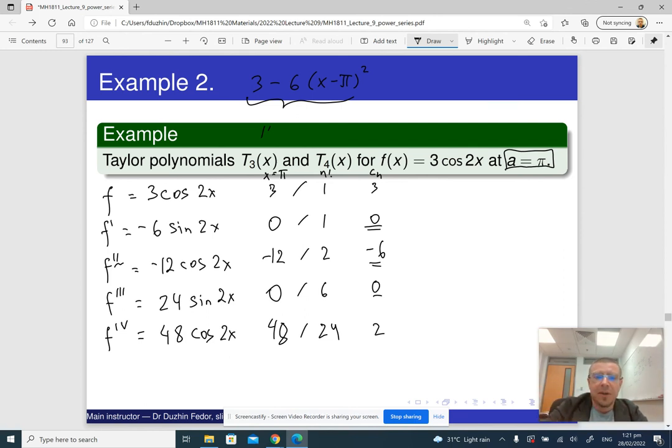All right, so how do we find Taylor's polynomial of degree 4? Basically, we've got to begin with the same thing. So 3 minus 6 times x minus pi squared plus the term of degree 4. So plus 2 times x minus pi to the power 4.